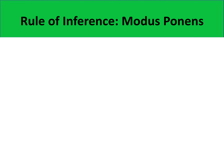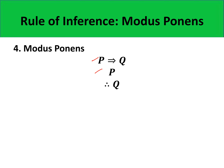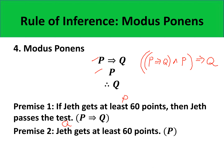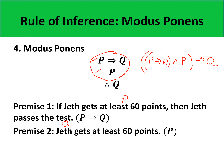The fourth rule is modus ponens. Its form is P implies Q as premise one and P as premise two, with conclusion Q. The propositional form P implies Q, and P implies Q, must be a tautology since modus ponens is a valid argument. For example, premise one: if Jett gets at least 60 points (P), then Jett passes the test (Q) — so P implies Q. Premise two: Jett gets at least 60 points (P). Therefore, our conclusion is Q: Jett passes the test.